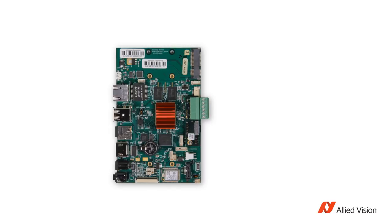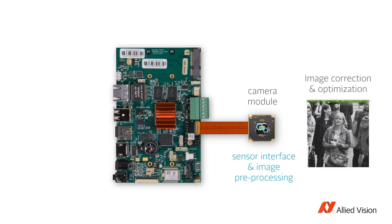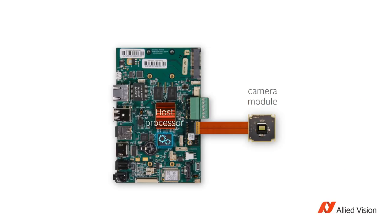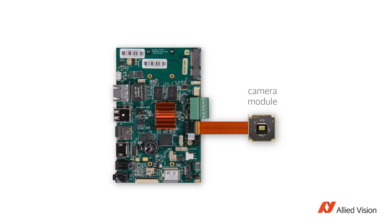A camera module, on the other hand, has its own processor with image processing capabilities and a built-in sensor interface. The raw images from the sensor are corrected and optimized directly in the camera processor. Therefore, the camera module delivers ready-to-use images to the host processor, which concentrates on the actual application tasks such as finding a face in the image. So unlike a sensor module, a camera module is a complete camera with its full functionalities — except it doesn't have a housing.